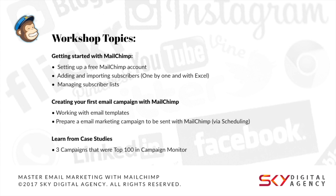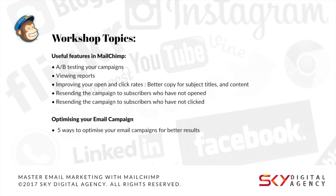Other topics include A/B testing and viewing reports. A key point many people don't know is that you can resend campaigns to subscribers who haven't opened them, or even to those who opened but didn't click. The typical open rate is about 16 to 20 percent, but resending can get you another 5 to 20 percent more — increasing total open rates by almost 30 to 40 percent.